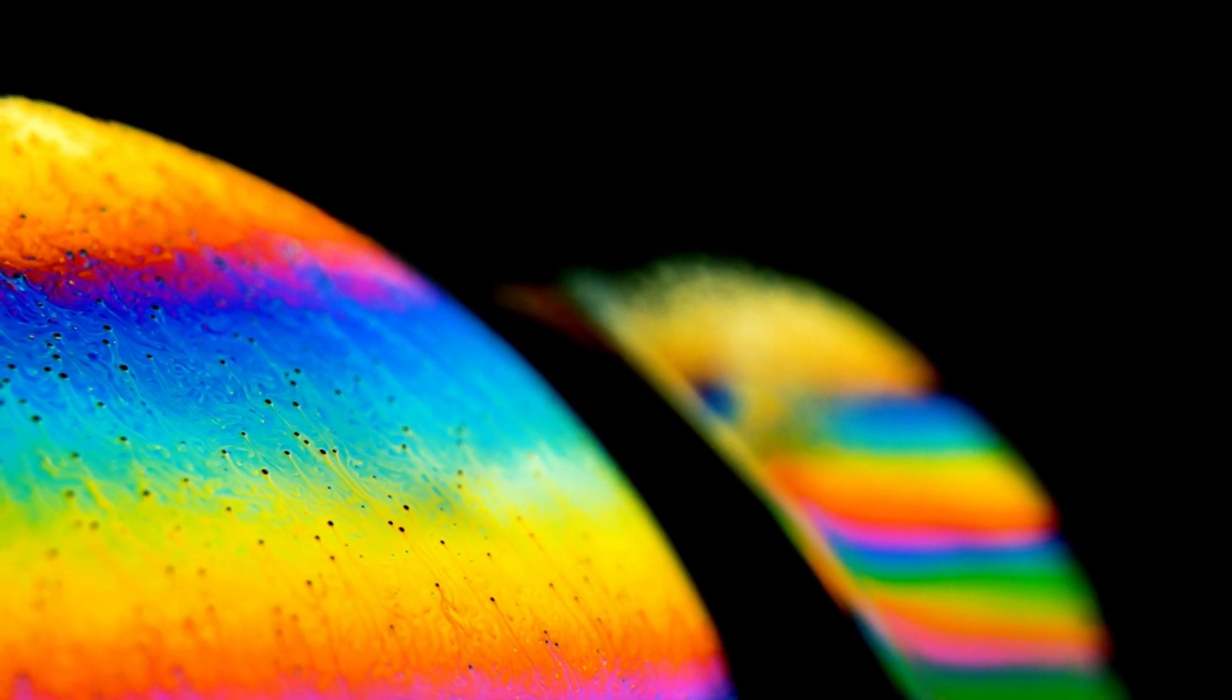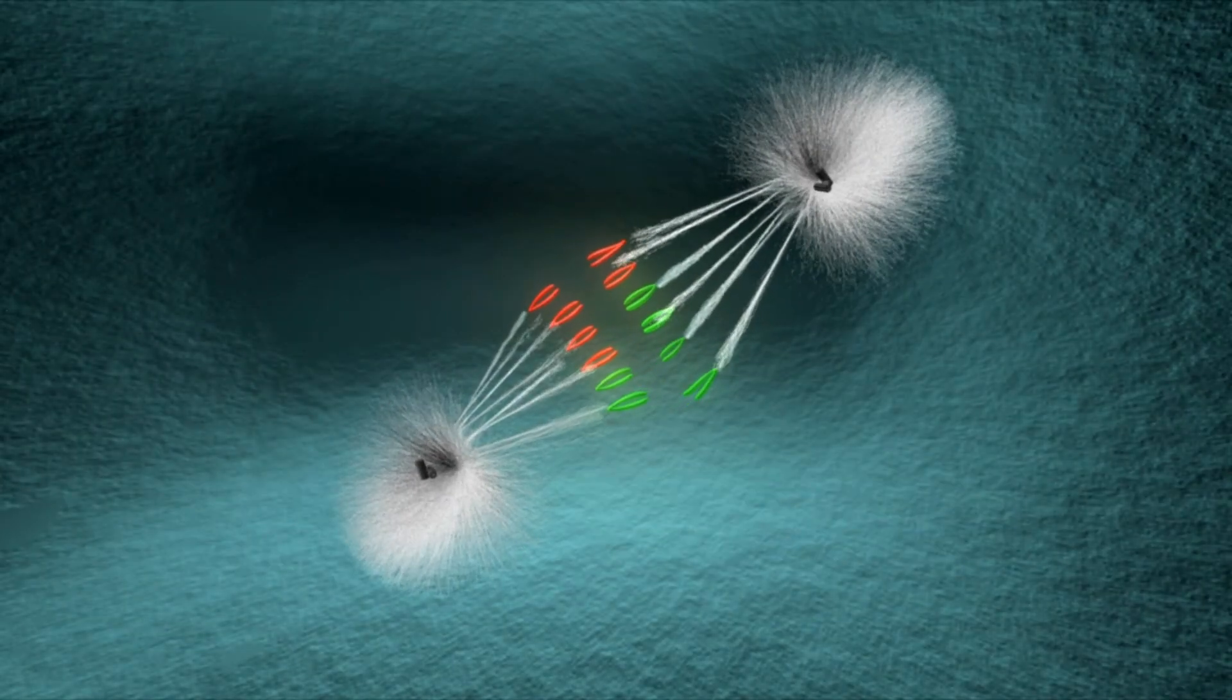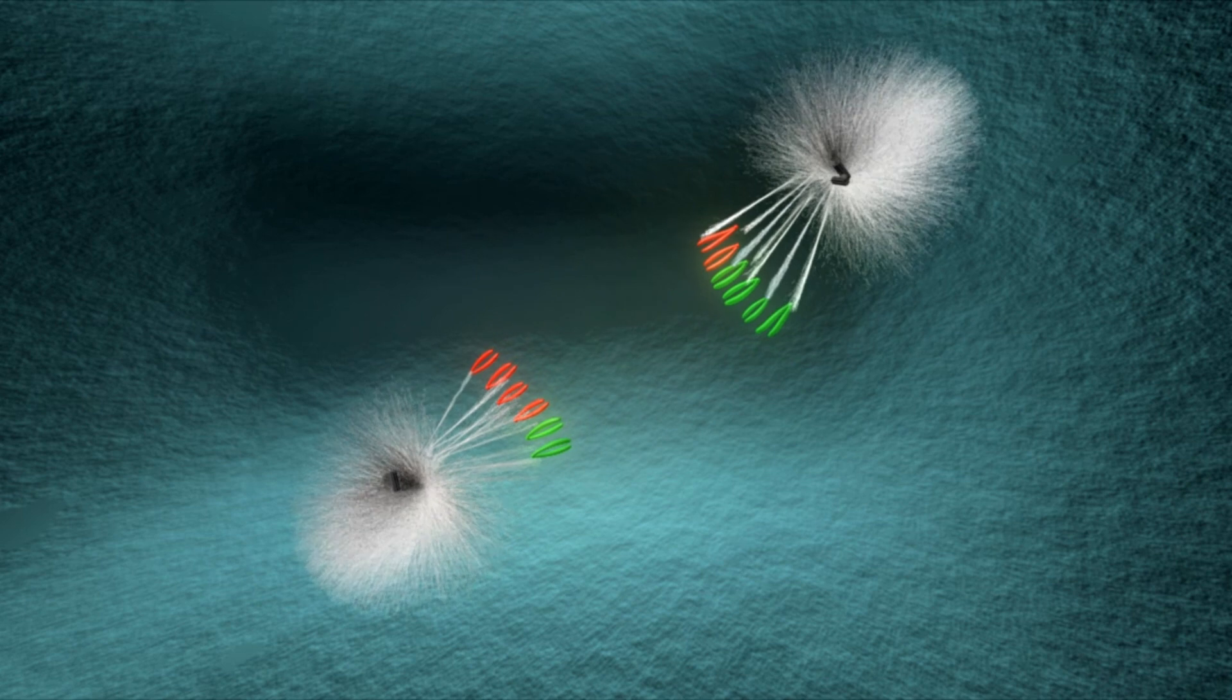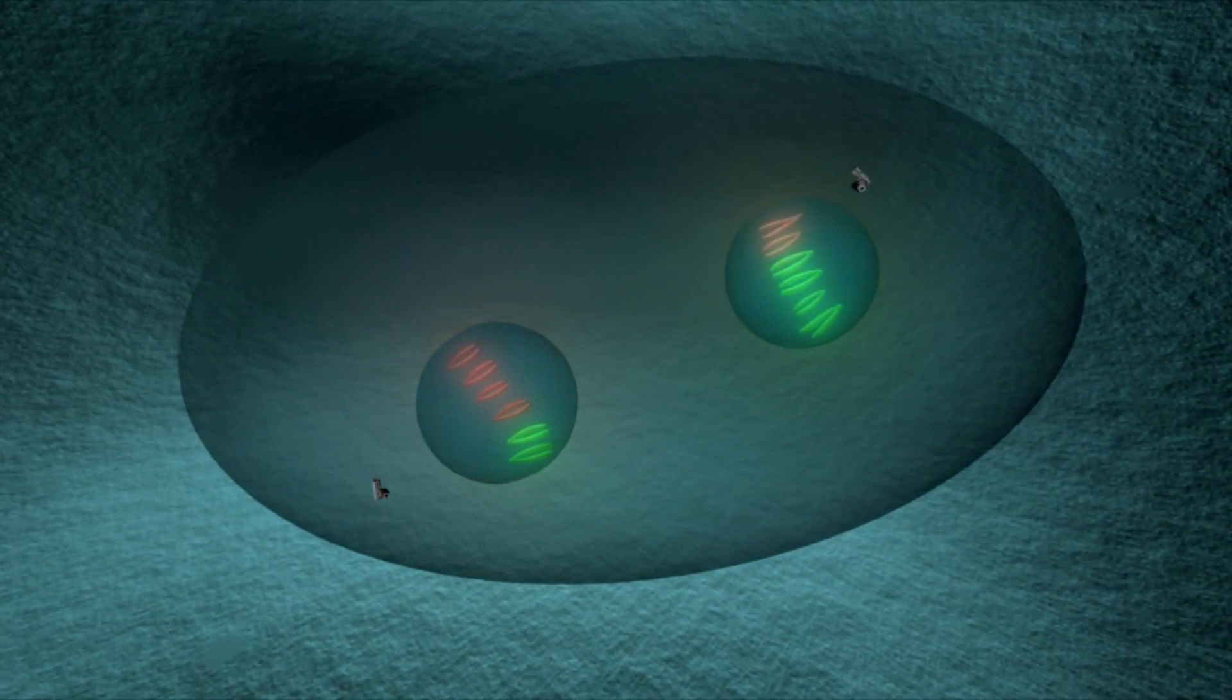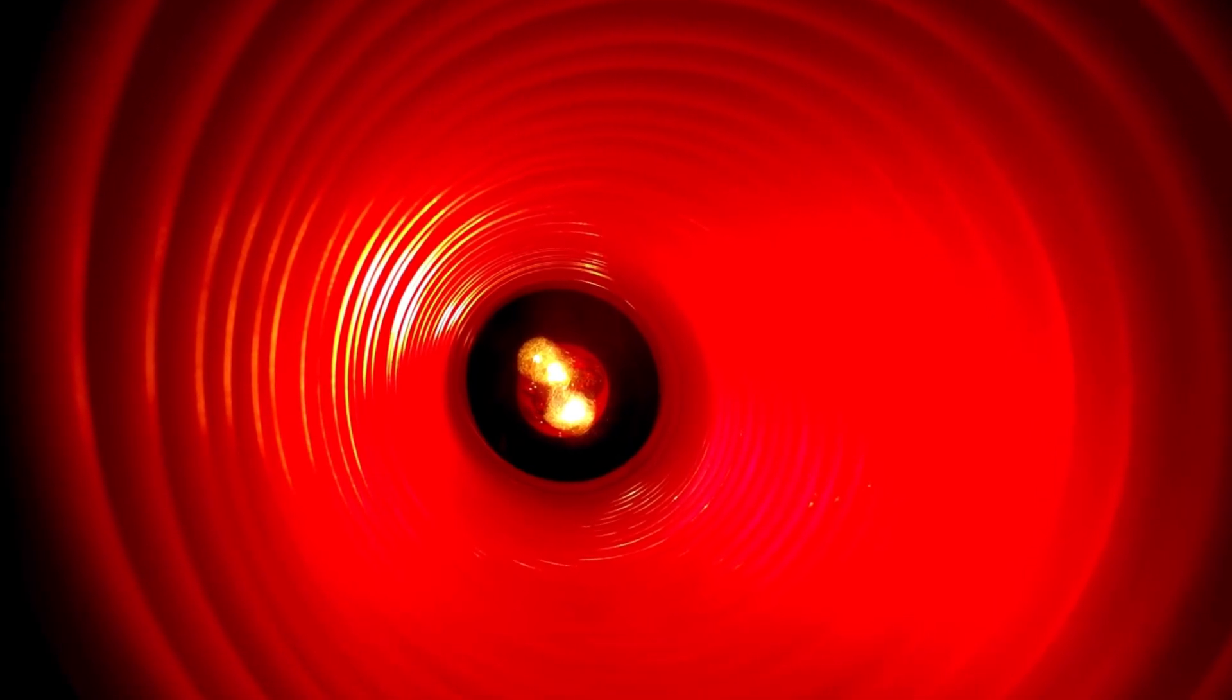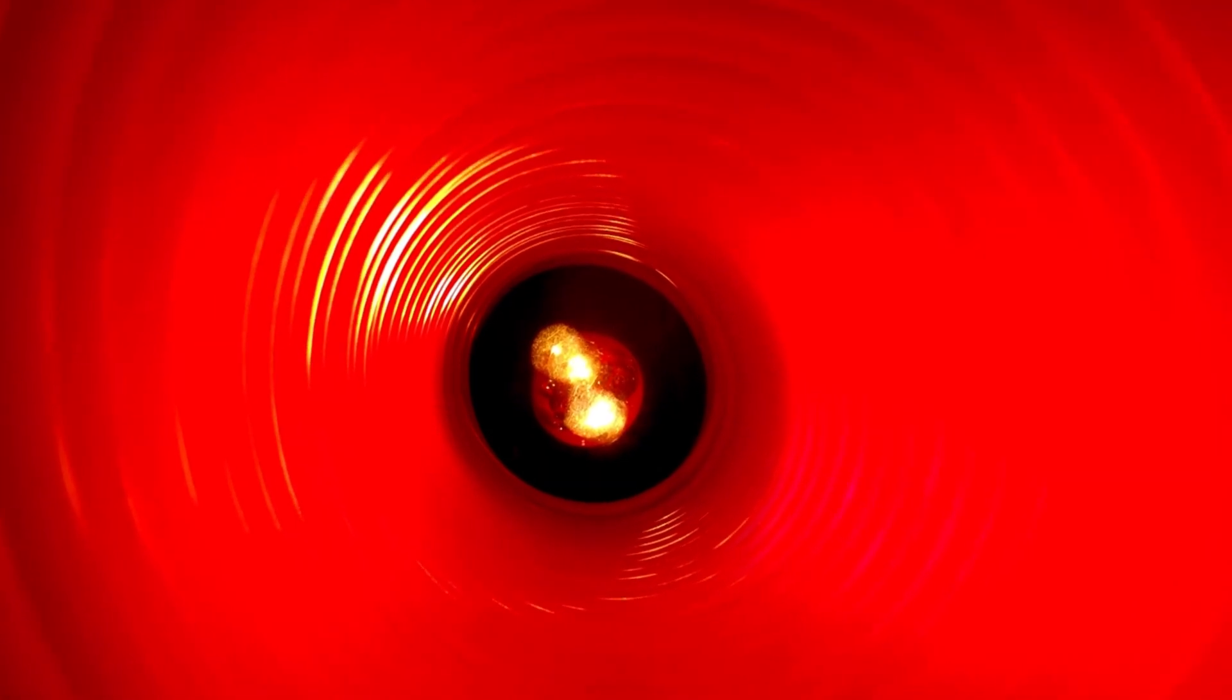Betelgeuse's massive size, its radius is estimated to be around 700 times that of the sun, means that these convection cells are far larger and more turbulent than those found in smaller stars. Recent studies using JWST's advanced instruments have indicated that Betelgeuse's surface could be experiencing increased convective activity, leading to larger, more violent upwellings of material. This may, in turn, have caused the star to temporarily increase its brightness as more hot plasma is exposed at the surface.